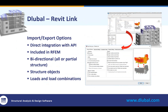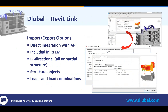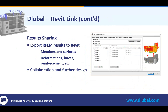The ability to integrate between the two programs is bi-directional. We can update all or only partial of the structure and continue to cycle between both programs continuously. You can transfer structure objects — as seen here in our dialog box to import/export in Revit directly, with the ability to turn on or off these objects. We also have the ability to transfer loads and load combinations, with options to turn on and off load cases, load combinations, and result combination options. Regarding results sharing, we have the ability to export RFEM results to Revit, including both members and surfaces — deformations, internal forces, and reinforcement.